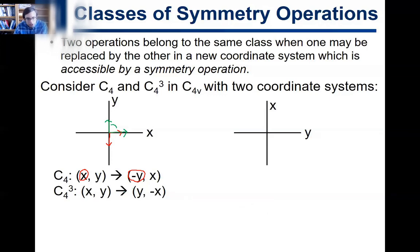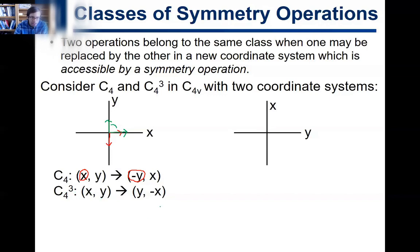Now for C4³, which is a 270-degree rotation: the X vector spins three times and maps to Y, and the Y vector spins three times and maps to negative-X. So under C4³: X → Y and Y → −X.